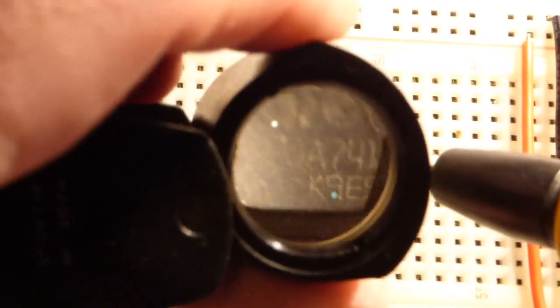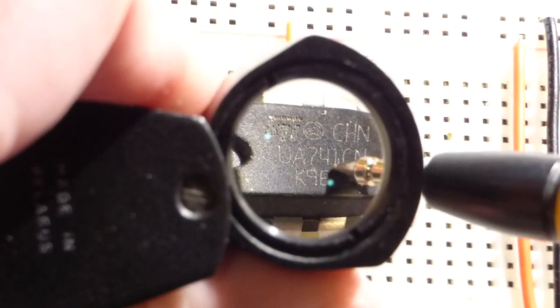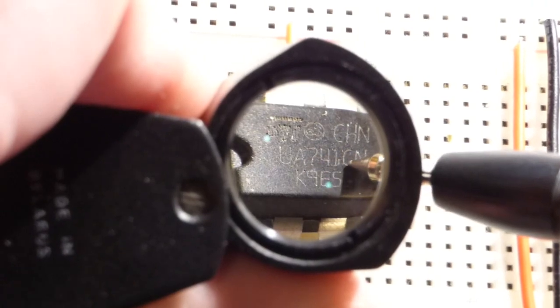I know it's hard to read the letters, probably can't even read the letters from there, but using this jeweler's loupe, you can see here the 741.